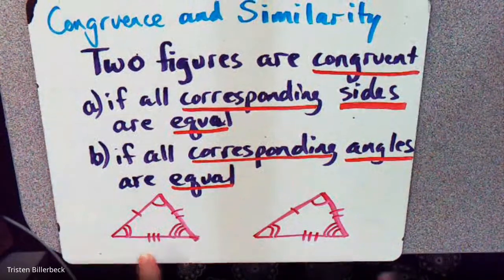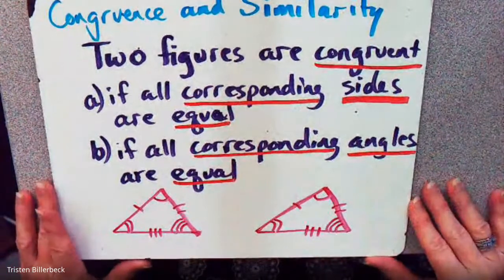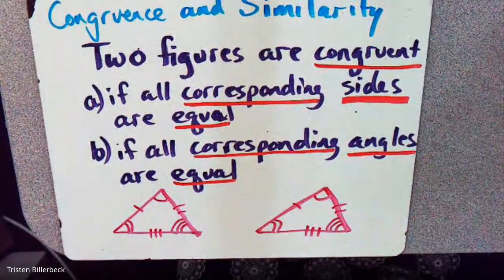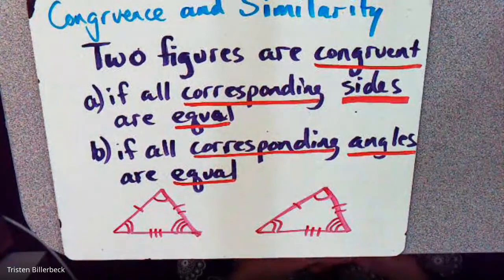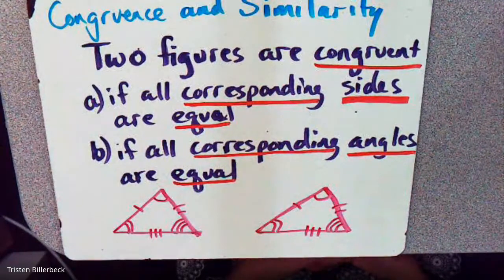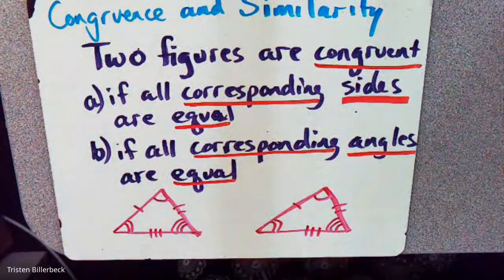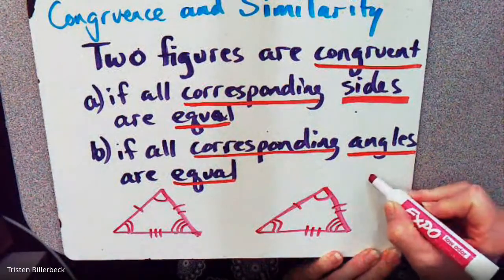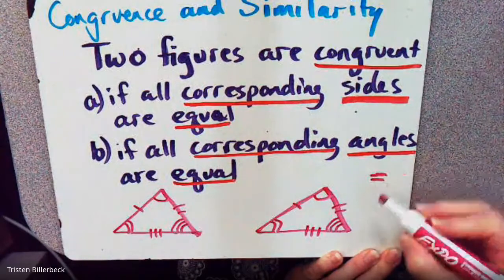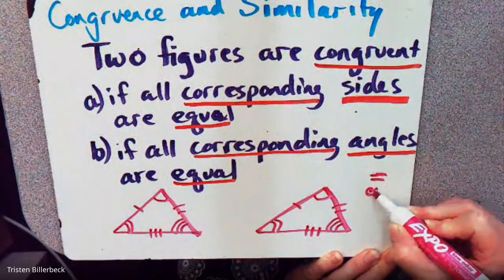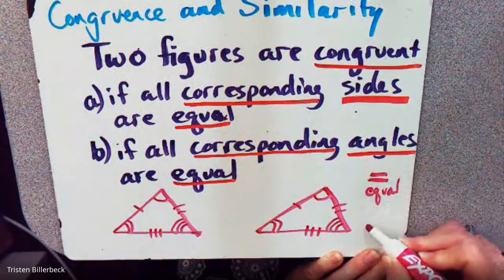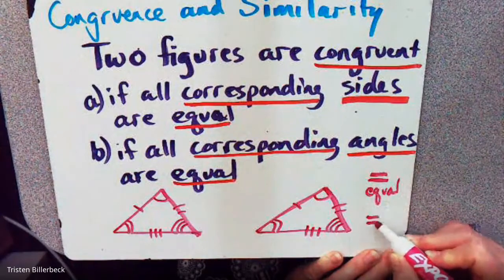Now what's the difference between congruent and equal? I've been using them rather interchangeably. We have different signs — this is the equal sign, and this is the congruency sign.